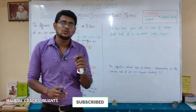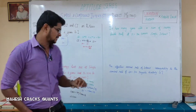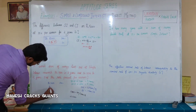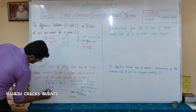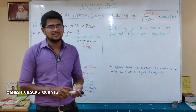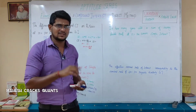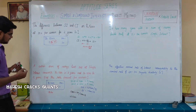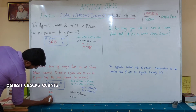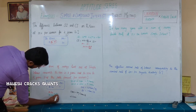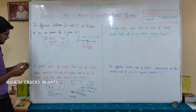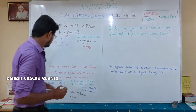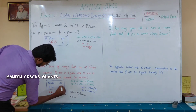To find the rate of interest: the Principal is Rs. 1200 (100%) and the Simple Interest per year is Rs. 60. So rate equals 60 divided by 1200 times 100. Cancelling zeros: 60 is 5 times 12, so the rate of interest is 5%.